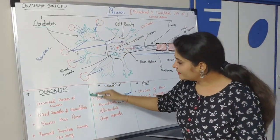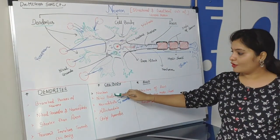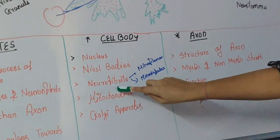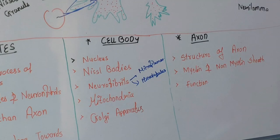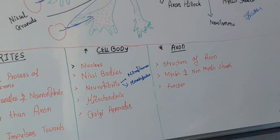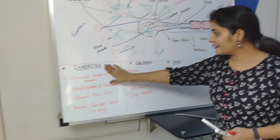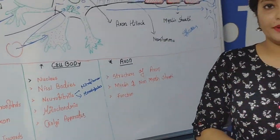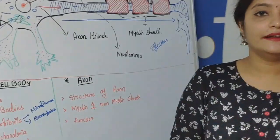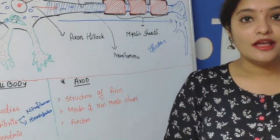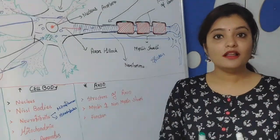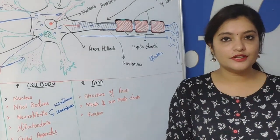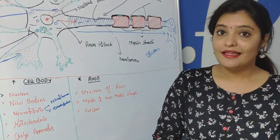So this is all about the organelles of the cell body. The cell body consists of nucleus, Nissl body, neurofibril, mitochondria, and the Golgi apparatus. We have seen the dendrites and the cell body. Now we will see the important topic of neuron, that is the axon, which is actually responsible for the transmission of action potential from one structure to another structure.